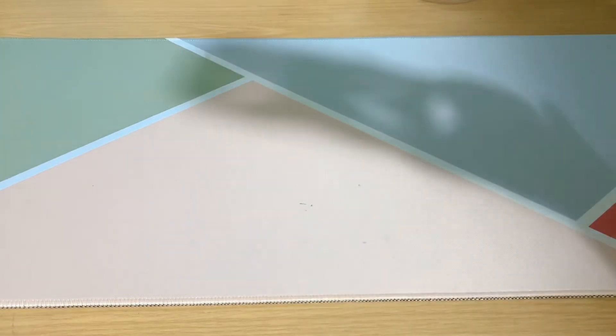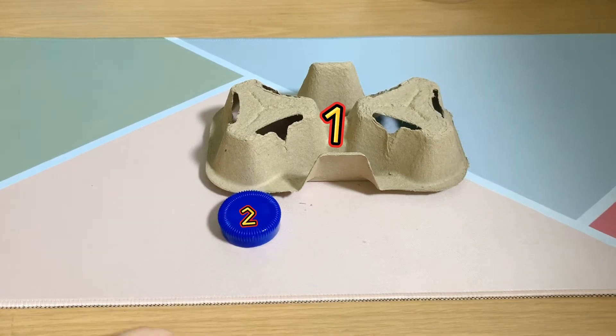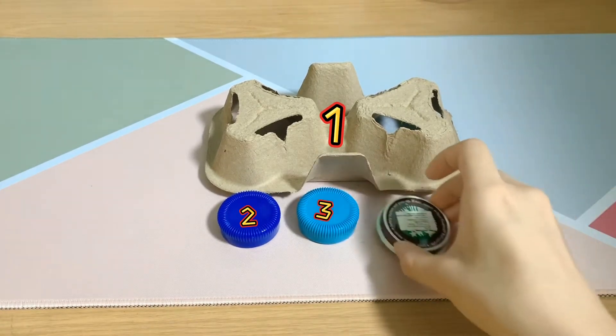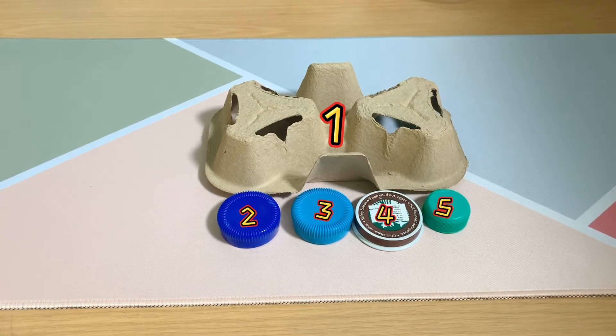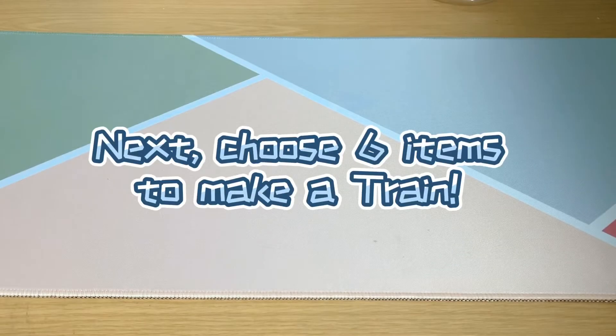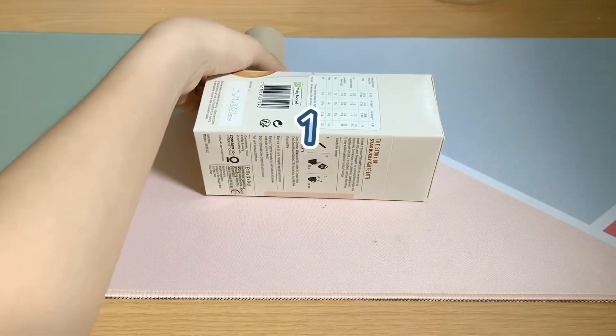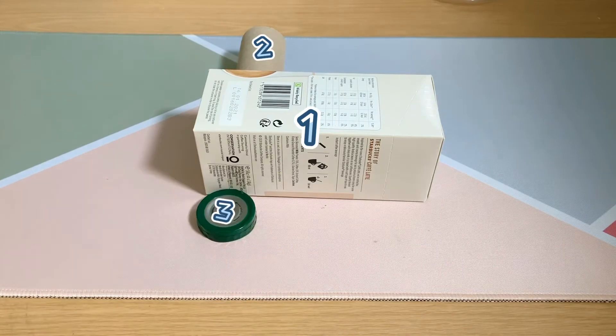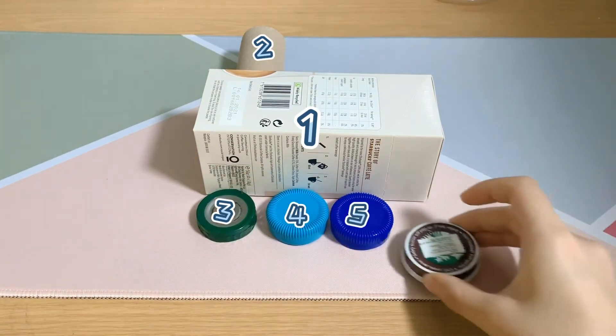...a car: 1, 2, 3, 4, 5. Next, choose 6 items to make a train: 1, 2, 3, 4, 5, 6.